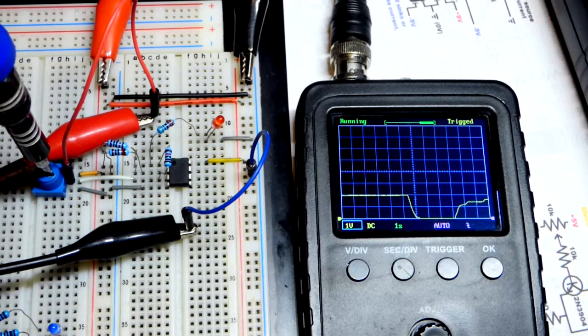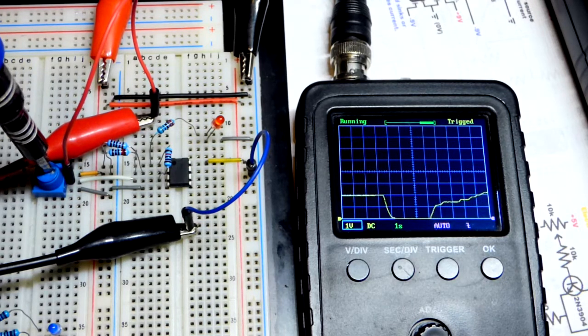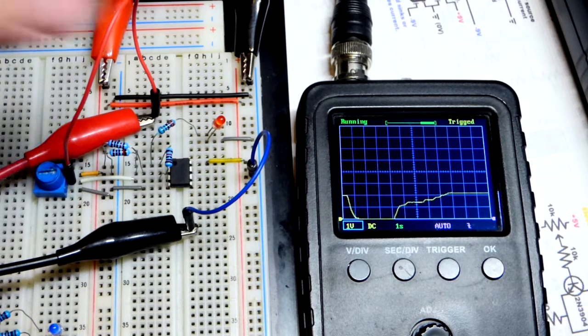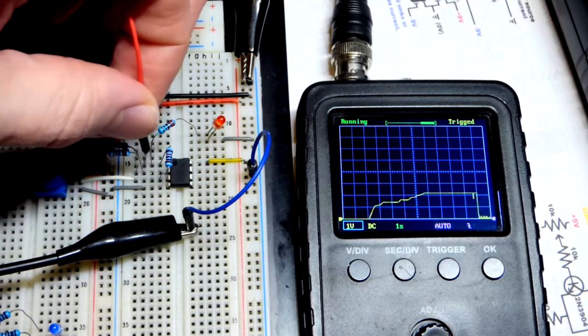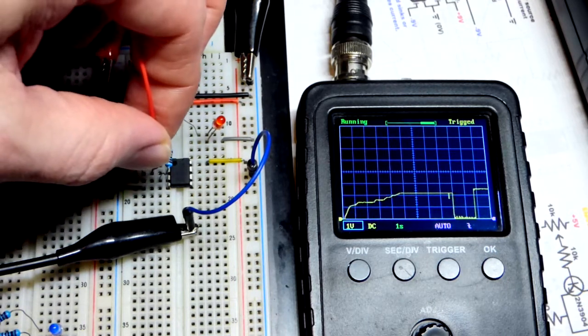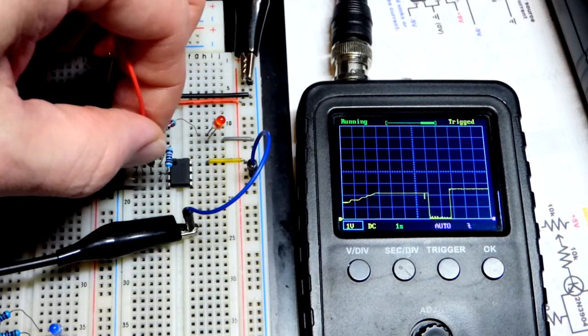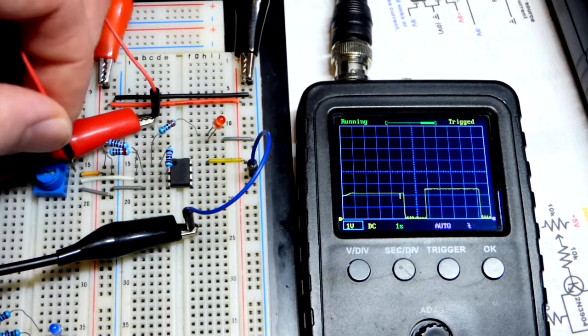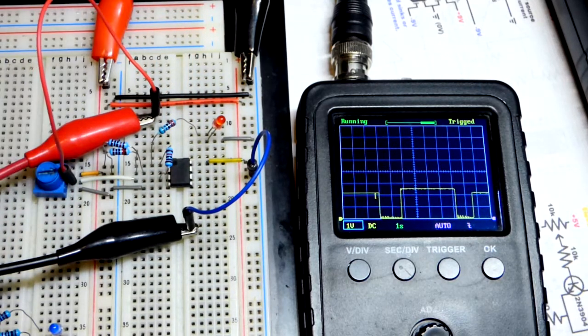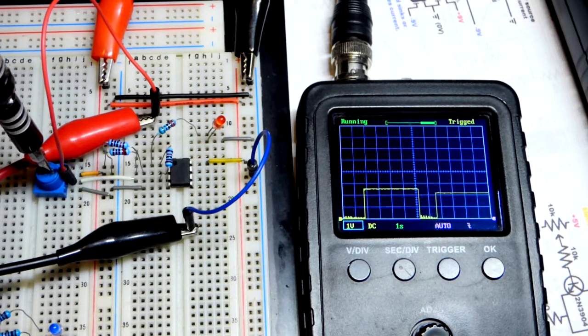The magic spot here is 2.5 volts, because that's what we set with the fixed value resistors. We'll look at that really quick. Right there, halfway above the second line right there, which is two volts, between two and three. We're a bit below that, so we've got to go up a little bit more.